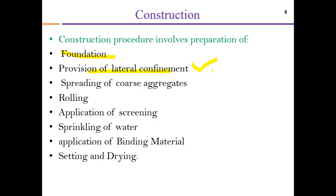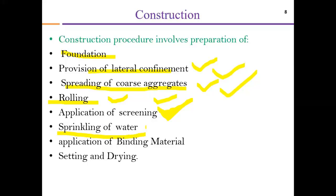Coarse aggregate is first dumped on site and then spread with the help of a grader or tractor. After that, rolling is performed, and once an acceptable amount of compaction is assured, screening is applied to further fill the free spaces among the particles — this process is known as dry rolling. After dry rolling is completed and acceptable compaction is assured, water is sprinkled on the surface, followed by spreading the binding material to fill any remaining pores or spaces.